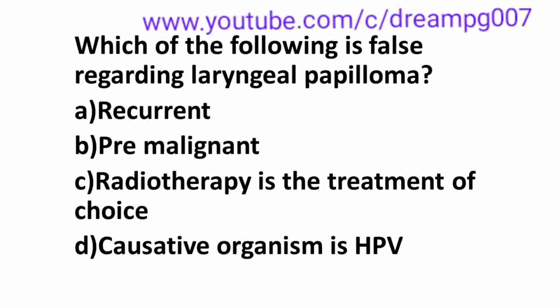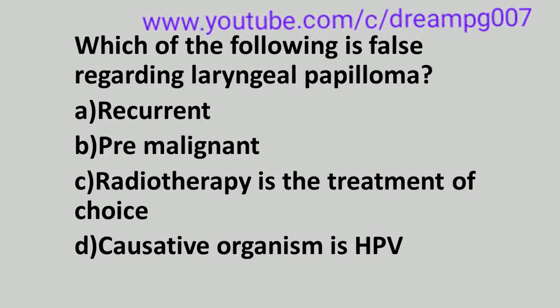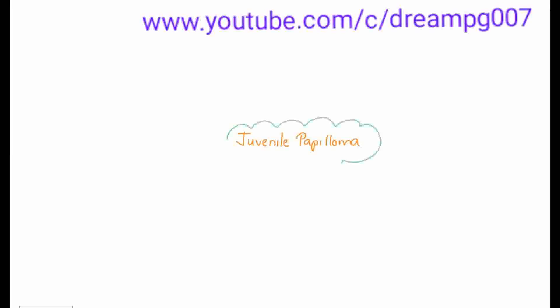Which among the following is false regarding laryngeal papilloma? Option A: recurrent. Option B: pre-malignant. Option C: radiotherapy is the treatment of choice. Option D: causative organism is HPV. The other name for juvenile papilloma is recurrent laryngeal papillomatosis.